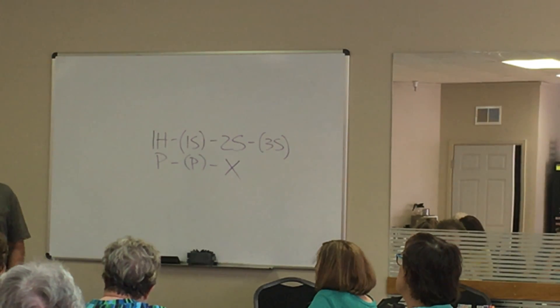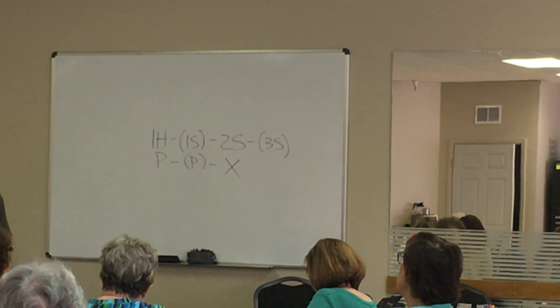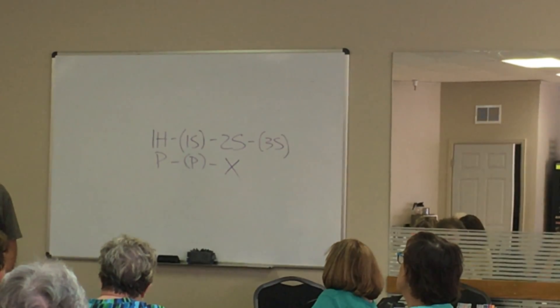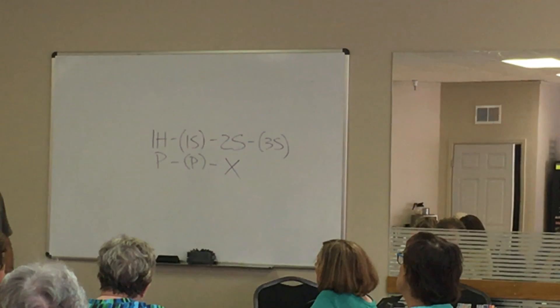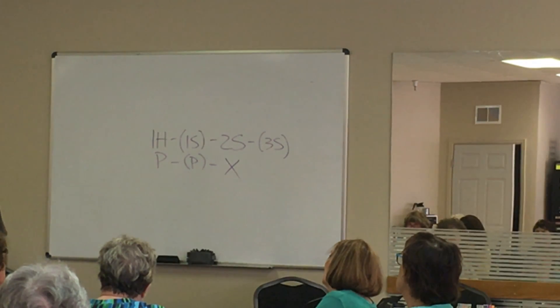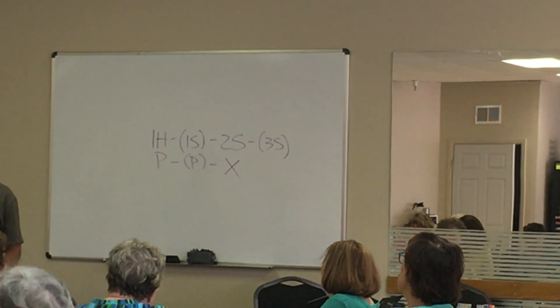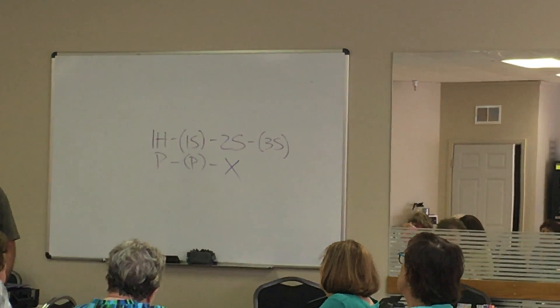Either one of us could have bid four hearts, and we didn't. They have outbid us. They have outbid us. We have the balance of power. We have the opening hand and the limit raise, and yet they outbid us. If it's our hand, but they outbid us, then we have to penalize.